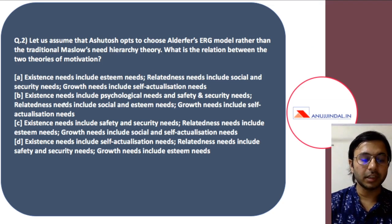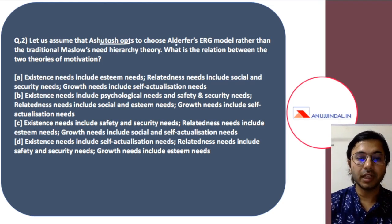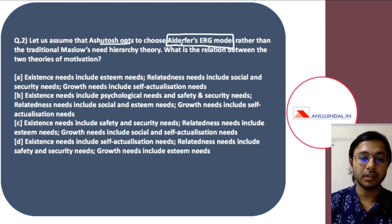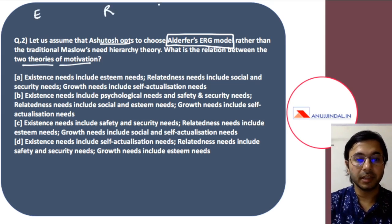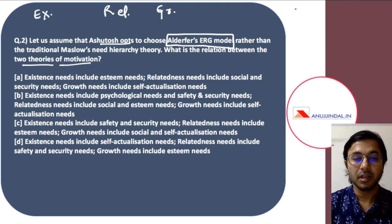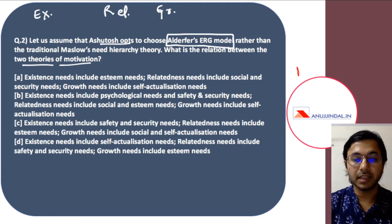The second question assumes that Ashutosh opts to choose Alderfer's ERG theory rather than the traditional Maslow's need hierarchy theory. You need to be aware of Alderfer's ERG theory very clearly. Alderfer's ERG theory stands for Existence, Relatedness, and Growth needs. These are the different kinds of needs specified by Alderfer, but they are only a modification of Maslow's hierarchy theory which divided needs into five parts.